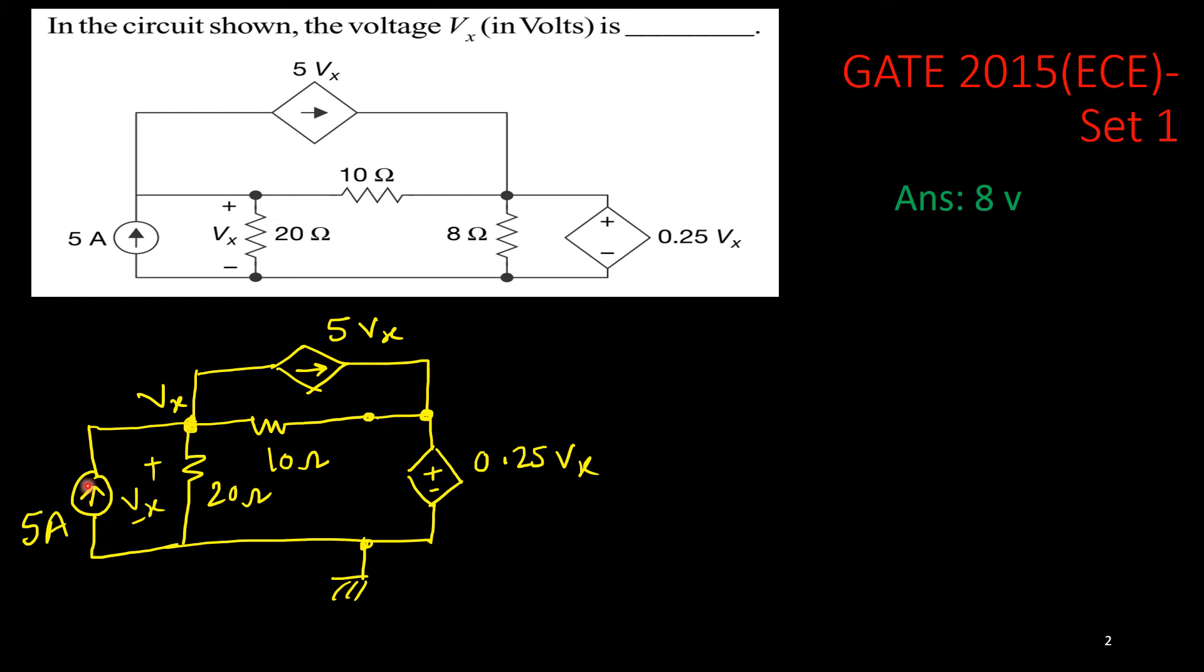In this node, 5 ampere current is coming, 5Vx is leaving. The current through this branch, 20 ohm is Vx upon 30. And current through this branch will be, so what is the node potential here? The potential here is 0.25Vx, because there is a pure voltage source here. This end is 0, and this end should be 0.25Vx only. Everything is known. I need to apply one KCL here, find one equation to solve for Vx.